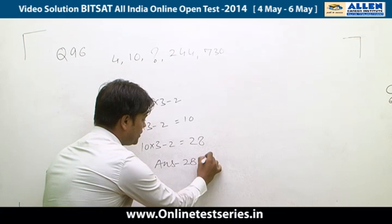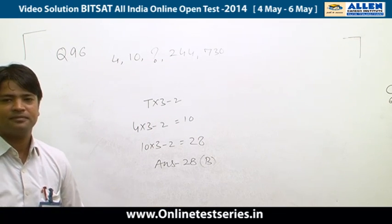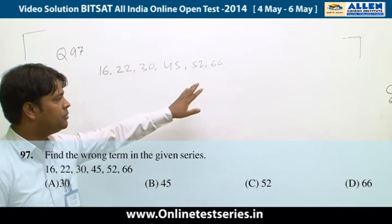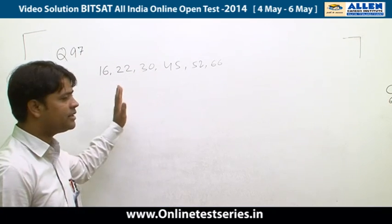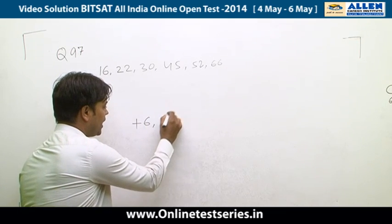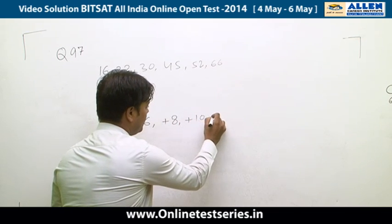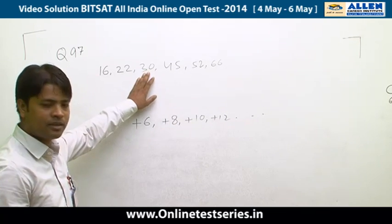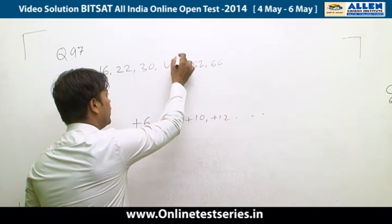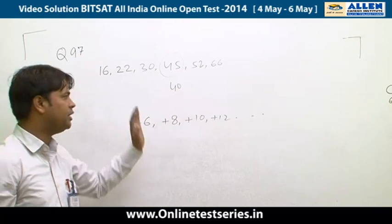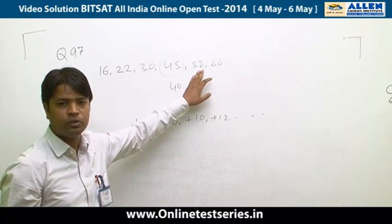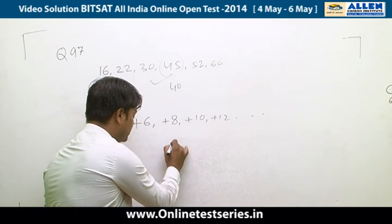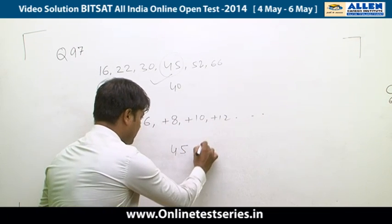Question 97 is again from series, and this time we have to find the wrong term. Consider the series: 16, 22, 30, 45, 52, 66. The pattern is adding 6, then 8, then 10, then 12, and so on. 16+6=22, 22+8=30, 30+10 should be 40 — but 45 is given. Checking further: 40+12=52 and 52+14=66, which fits. So the wrong term is 45, option P.